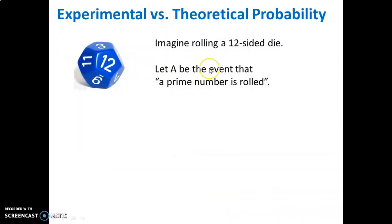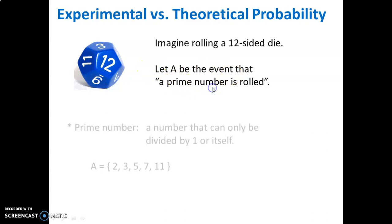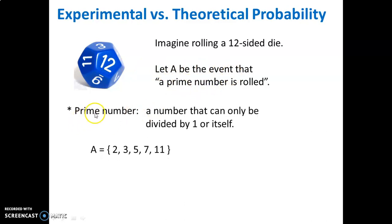Now we're going to look at another experiment to show one more time how running a large experiment gets us close to the theory. We're going to roll a twelve-sided die, so there are twelve possible outcomes. Let A be the event that a prime number is rolled. A prime number is a number that can only be divided by one or itself. In the numbers one to twelve, the prime numbers are two, three, five, seven, and eleven — all other numbers can be divided by something other than one and themselves.